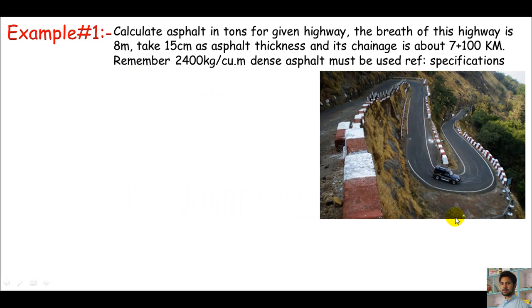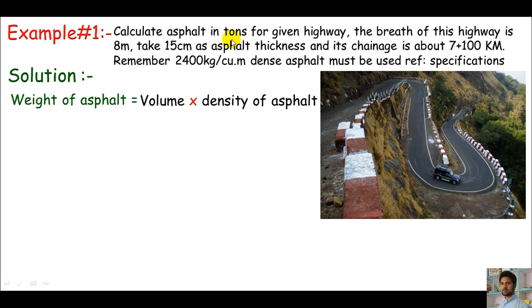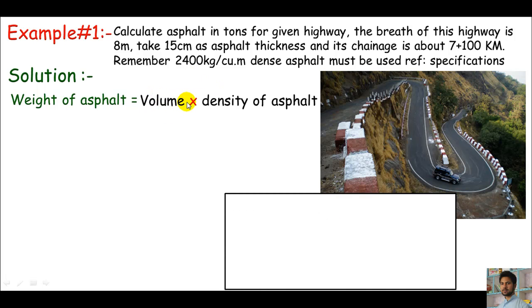I must start the solution for asphalt calculation. I'll come straight into solution and my approach is the weight of asphalt. We are asked to calculate this in tons. The weight of anything is always its volume times density. I'll first calculate the volume because the density is given. The volume is always the cross-section area times length: breadth times thickness times length.